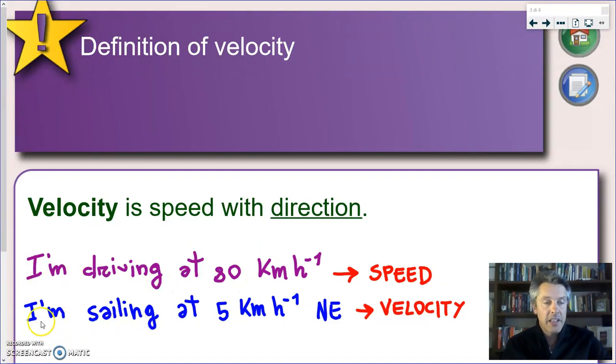But in the second sentence, I'm saying, I'm sailing at 5 kilometers per hour, northeast. So, not only I'm telling you how fast I'm going, I'm also telling you in which direction. So, this second sentence refers to my velocity.